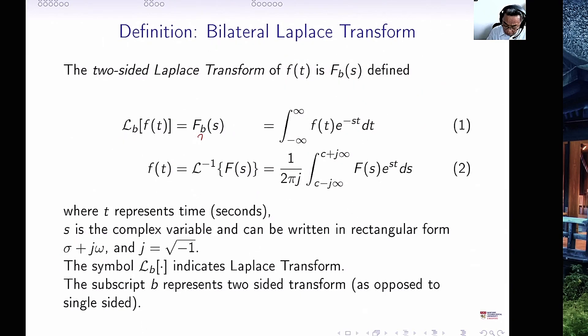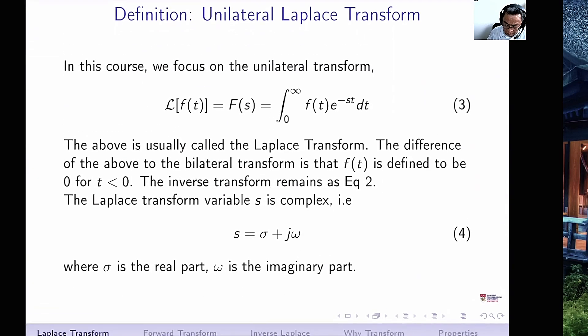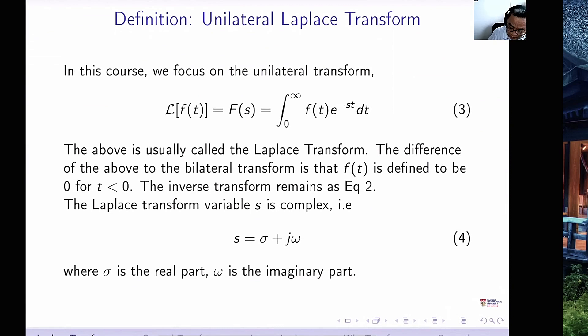We now continue with the definition of unilateral Laplace transform. The unilateral Laplace transform looks very similar to the bilateral. The only difference is that it takes the signal f(t) and performs this integration f(t) times e^(-st), but now only with respect to positive time, time from 0 to infinity. So it is on the right-hand side of time. So if we look at time here, this is time, and if this is 0, we are only performing integration with respect to this signal on the right-hand side. For example, f(t), and we have assumed that the signal does not exist before time.